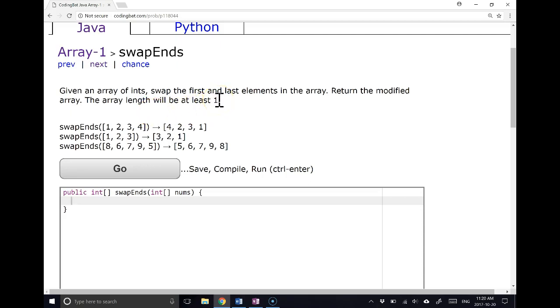Given an array of Ns, swap the first and last element in the array. Return the modified array, the array length will be at least 1. This is really important to highlight. Because we know that the length is at least 1, we don't have to account for a situation when the length is 0. If we had to account for that, we'd have to do some check and figure out what to do in that case. It's really important when you're working through these types of problems to look at the restrictions around the length of the array. And the same thing goes for strings.